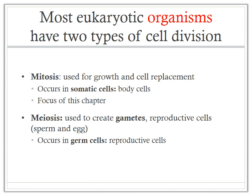Meiosis is the other type of cell division, used to create gametes — reproductive cells. In humans these are sperm and eggs. Meiosis occurs in germ cells; germ cells are themselves somatic cells, but they undergo meiosis to create gametes.